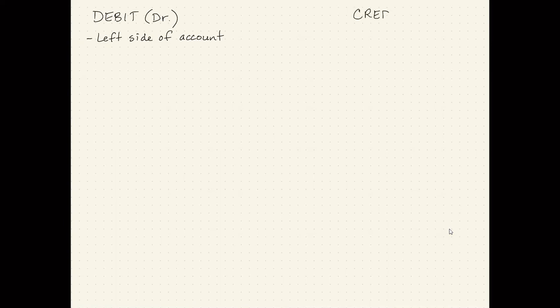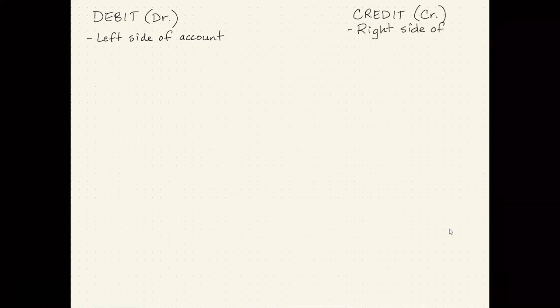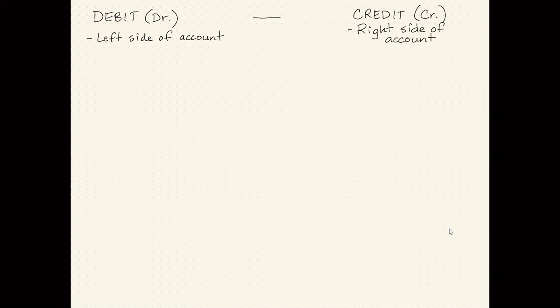So credit, on the other hand, which you will see me abbreviate as CR, refers to the right side of an account. So if we're looking at a T account, and let's just say in this example we're looking at cash, the debit side is the left and the credit side is the right.